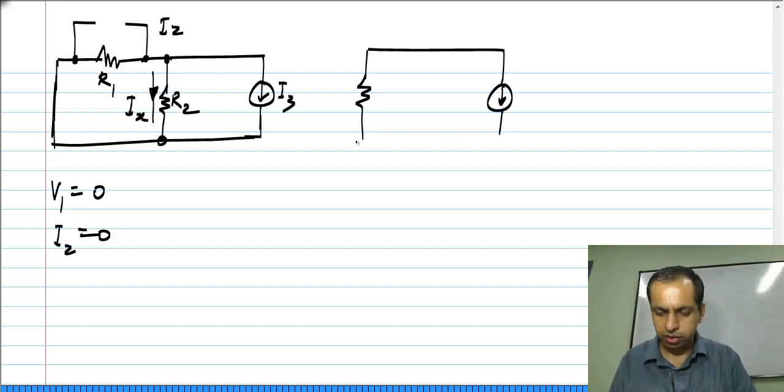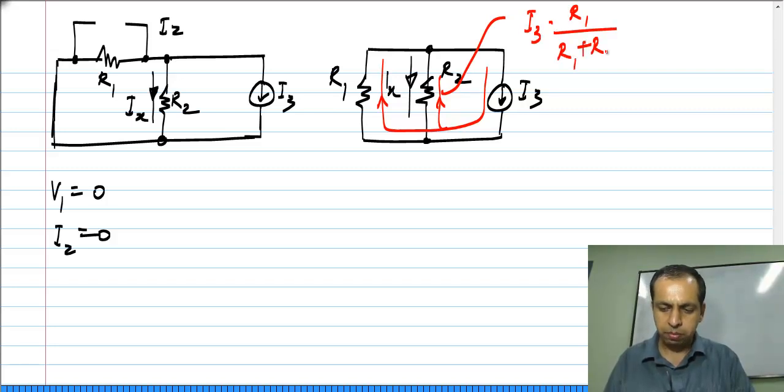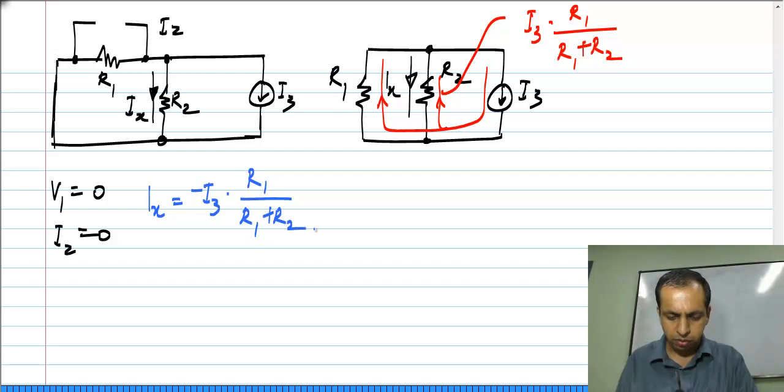Again it is I3 applied across R1 and R2, and Ix is defined in this direction. Now the current flowing through R2 - this total current I3 gets divided into two parts and flows into R2 and R1. The part that flows into R2 is given by I3 times R1 by R1 plus R2 from the current divider expression. We also see that this current that we calculated is in opposite direction to Ix. So Ix is minus I3 times R1 by R1 plus R2.